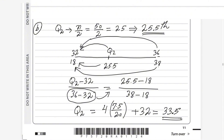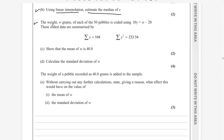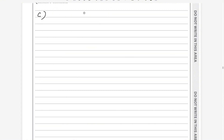For the next part, the weight w grams of each of the 50 pebbles is coded using 10y = w minus 20. The coded data are summarized by: sum of y = 105, sum of y² = 233.54. We need to show that the mean of w is 40.8. Apply the mean on both sides of the coded equation and rearrange to get w-bar equals 10 times (sum of y divided by n) plus 20.